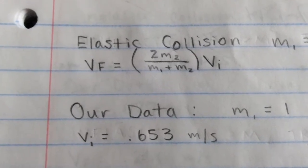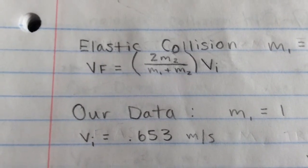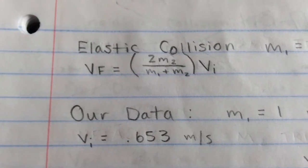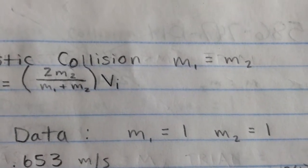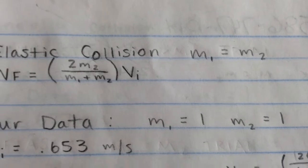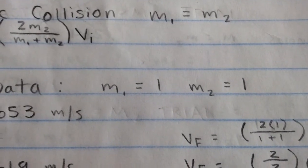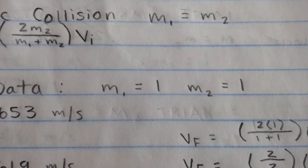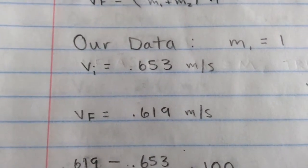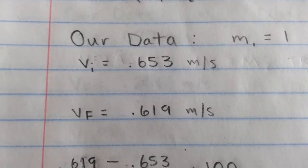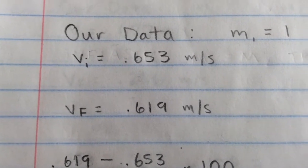In simpler terms, the velocity final equals the velocity initial in a perfect elastic collision when the mass of the first object is equal to the mass of the second object. Our data: the masses we used were 1 for each because they're equal, our velocity initial was 0.653, and our velocity final was 0.619. Pretty close.